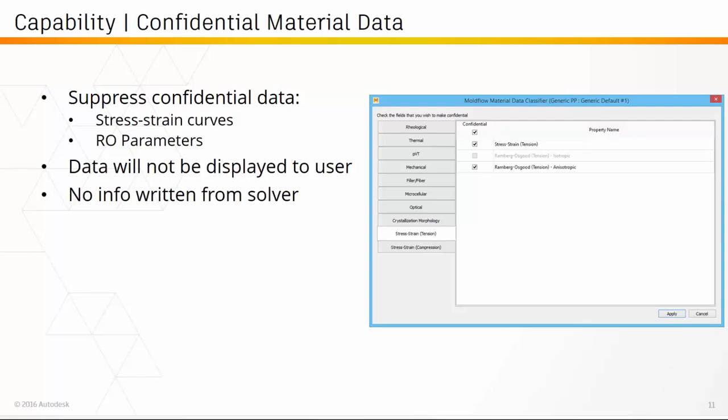We have also added capability for confidential material data, which has been a request for quite some time in the Moldflow world and is very important when talking about nonlinear stress-strain data. Users can now use the Moldflow data classifier to suppress confidential data such as stress-strain curves and Ramberg-Osgood parameters used by Helios PFA for nonlinear mechanical simulation. If those data fields are set as confidential, the data will not be displayed to the user and there will be no information written to the solver. Material suppliers can perform this action on their own and provide the databases to the user or to the team for inclusion in the database.